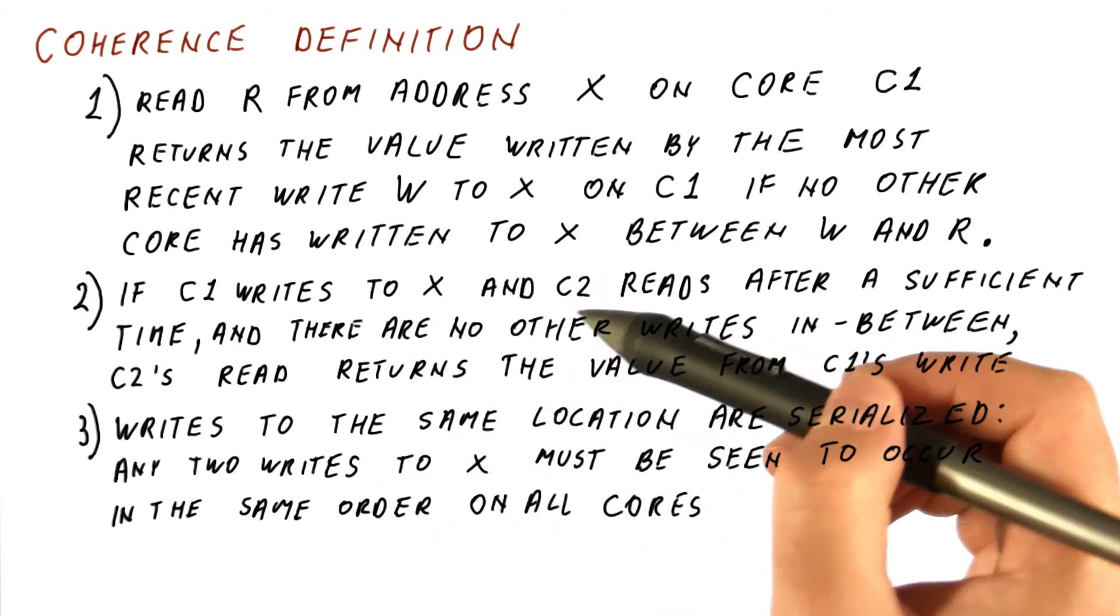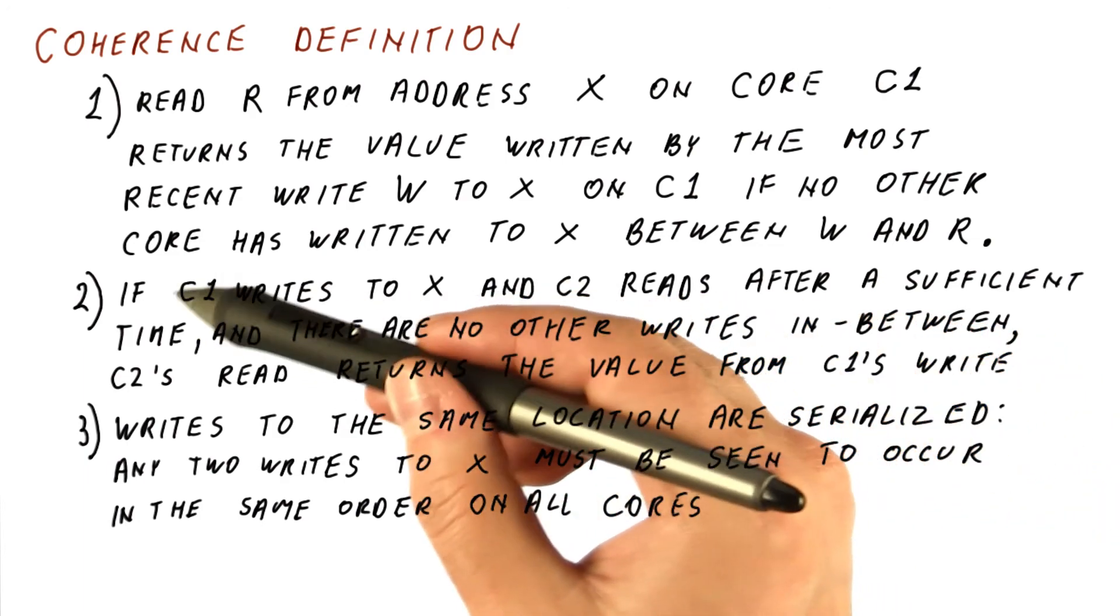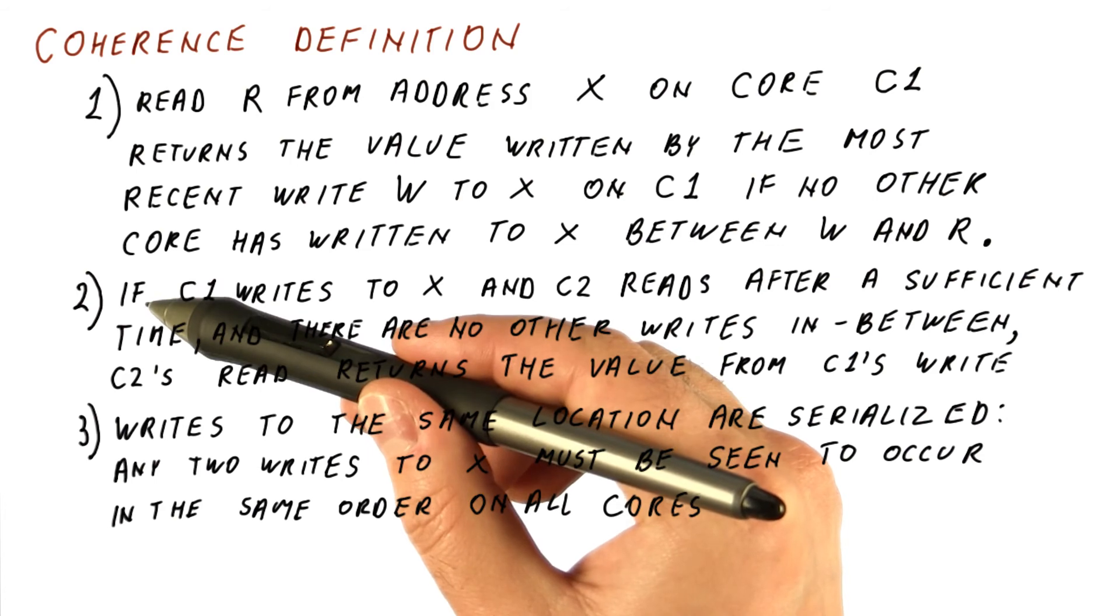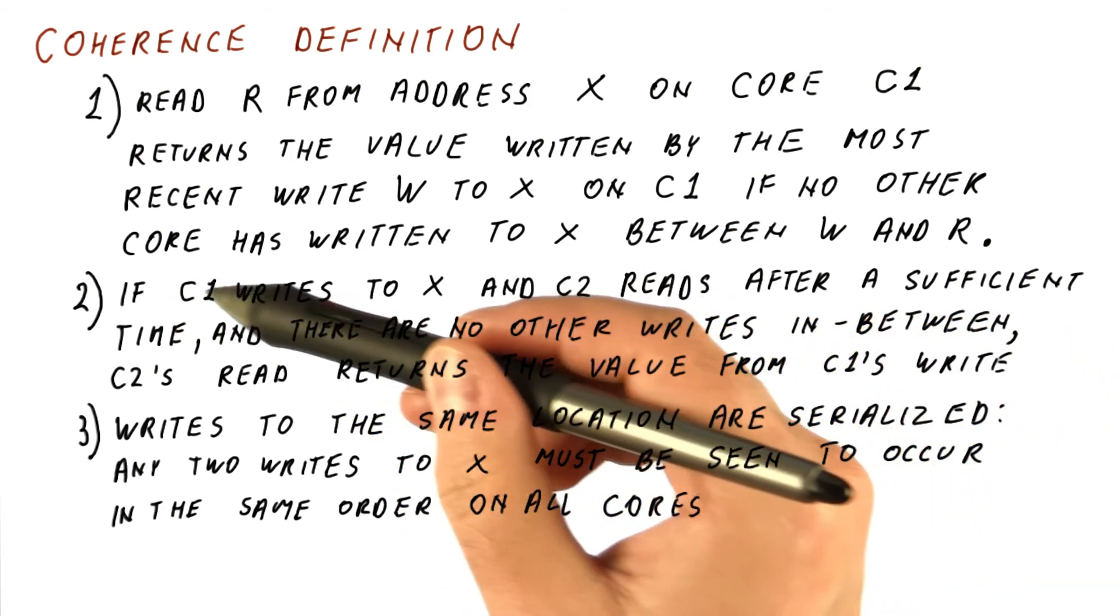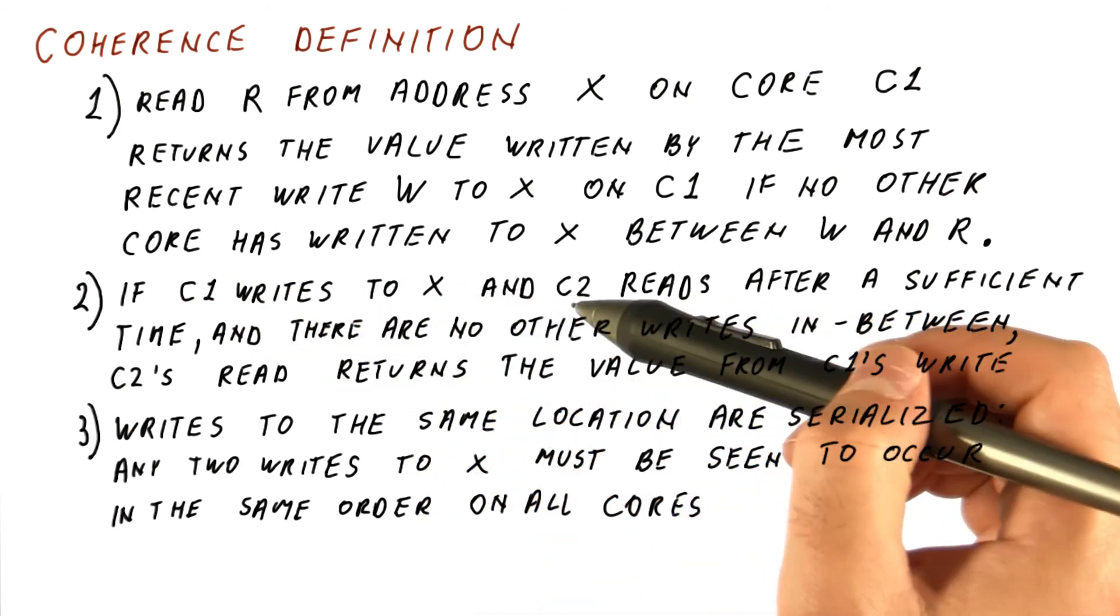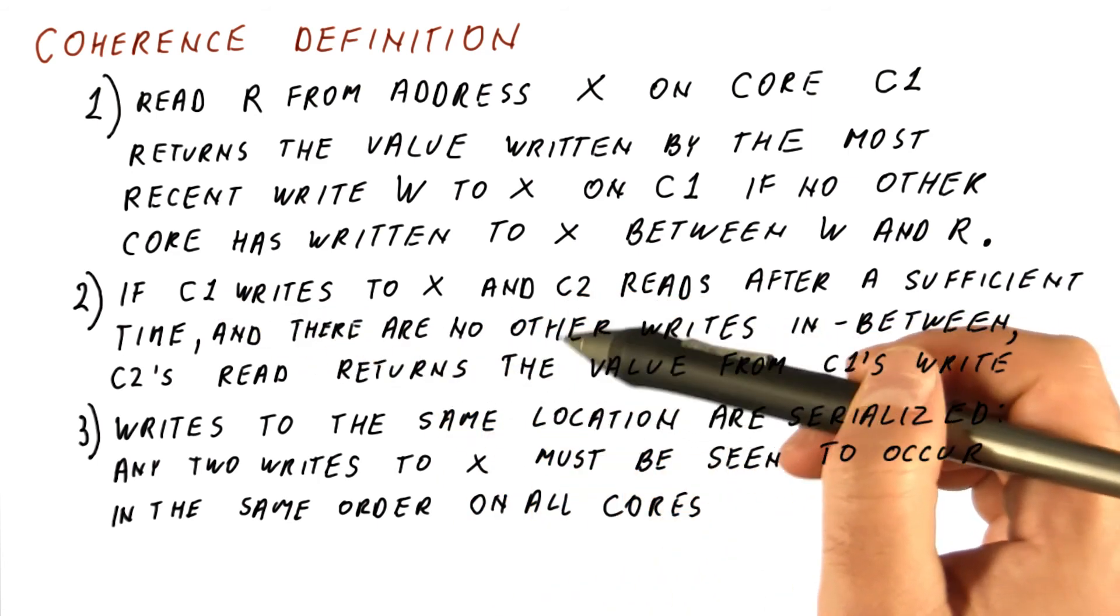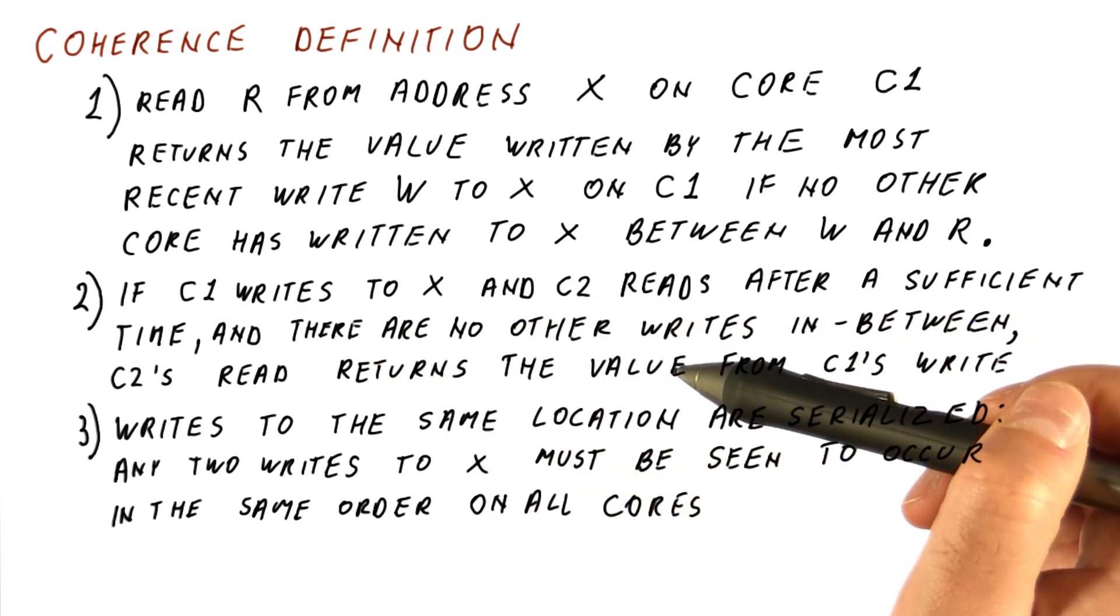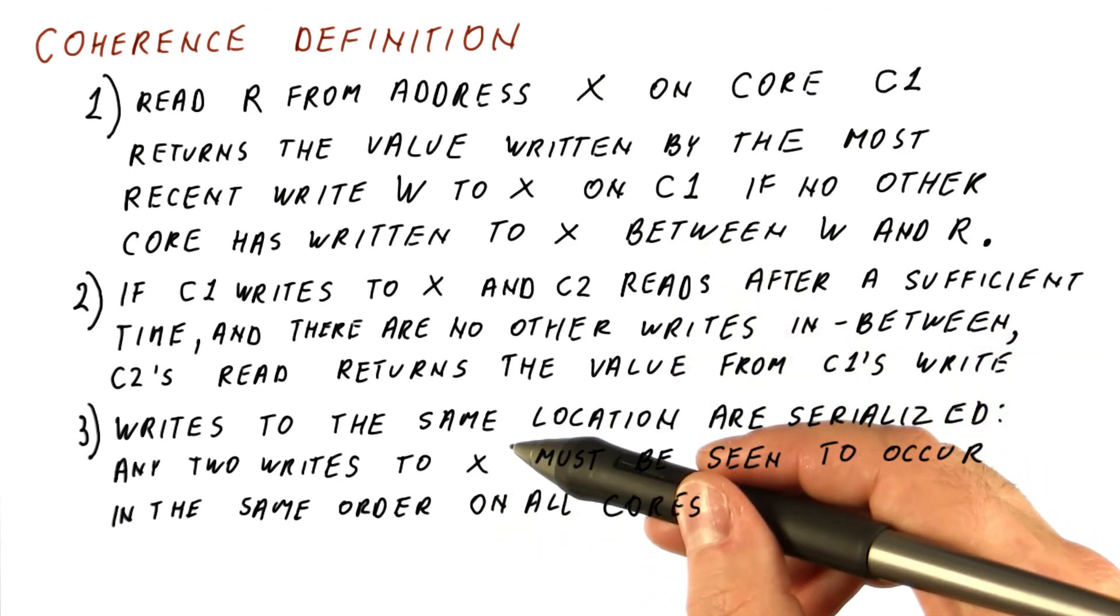What this part of the definition says is that whatever c2 sees, if c2, for example, sees that the final value is that from c1 and not from c3, then all the other cores, when they read that location after c2, need to also see that order. So it cannot happen that c2 thinks c1 wrote last.